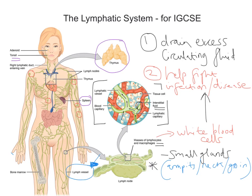So there you have a very quick snapshot of the lymphatic system, designed for IGCSE students, covering key definitions of lymph fluid, lymph vessels, and what the small glands called lymph nodes are. We also touched on lymphatic drainage of different parts of the body, and how lymphatic ducts drain into one of the two subclavian veins in the neck, allowing the return of fluid into the main circulatory system. Hope that helps.